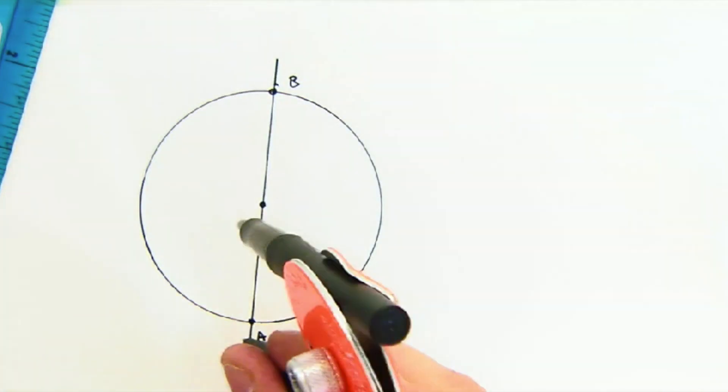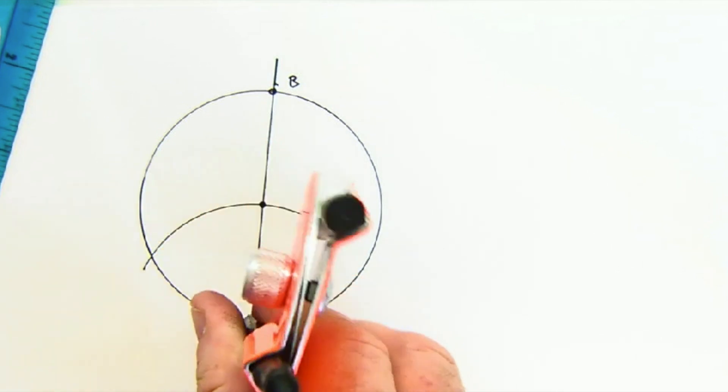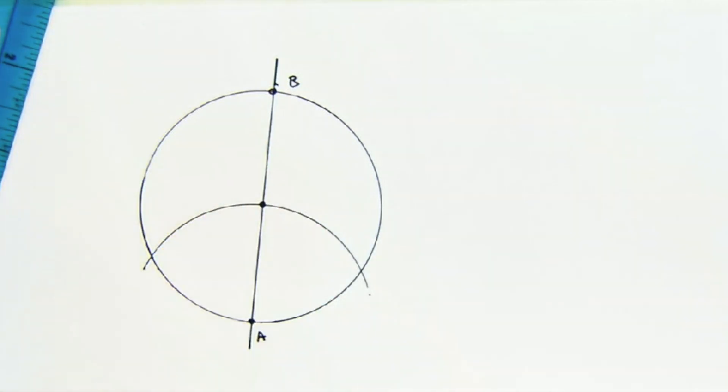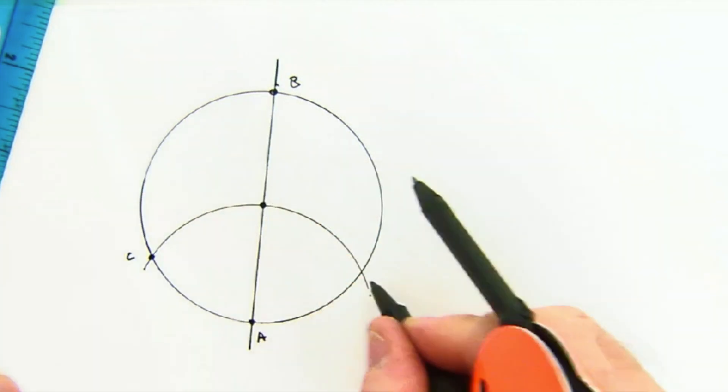I am going to then take my compass and create an arc that is the same radius as the original circle. We'll call this C and D.